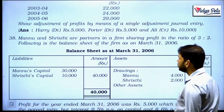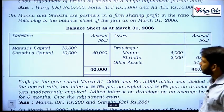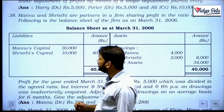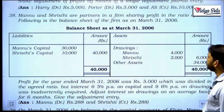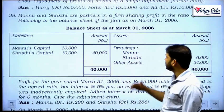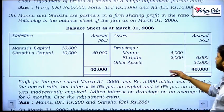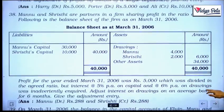Following is the balance sheet of the firm as on March 31, 2006. In liabilities we have Manu's capital of 30,000 and Srishti's capital of 10,000, then the drawings are shown on the asset side. Manu's drawing was 4,000, Srishti was 2,000, and other assets 34,000.